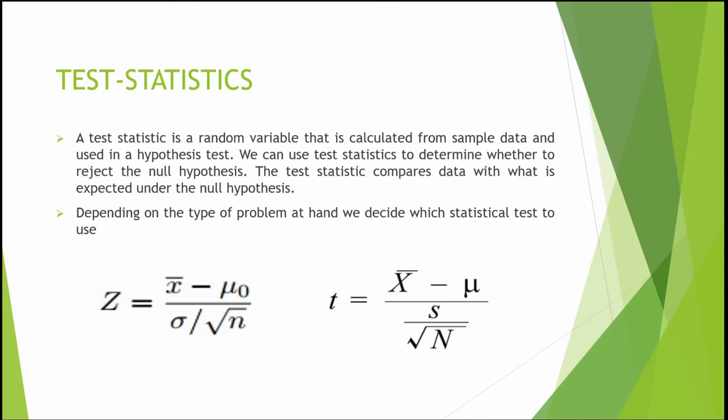A test statistic is used to evaluate the null hypothesis. If the sample size is more than 30, we use the Z statistic. If the sample size is less — for example 25 or 15 — we use the T statistic.